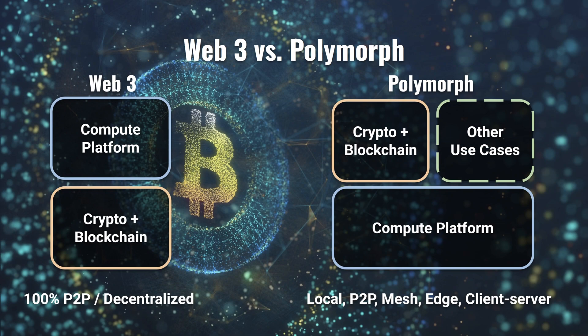Polymorph is not a Web3 project. The Web3 movement has a similar set of goals as Polymorph, but their suggested technology stack looks different. Web3 compute platforms tend to run on top of a cryptocurrency and blockchain platform. In Polymorph, on the other hand, this layering is reversed: at the bottom you have the compute platform, and if you wanted to implement a cryptocurrency and blockchain platform, it would run on top of the compute platform, not the other way around. Additionally, in Polymorph you could implement many other use cases directly on top of the compute platform, which have no need for cryptocurrencies and blockchain.